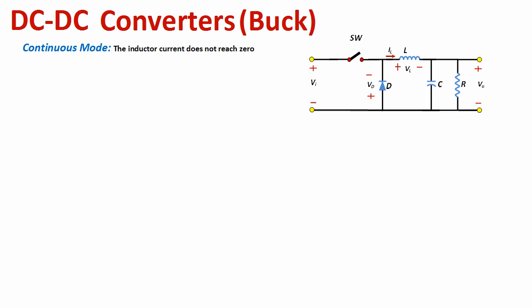We are going to assume that the output voltage is constant, meaning the ripple across the load is very small and we are going to neglect it — so it's a ripple-free circuit. We are also going to assume that VD is zero to simplify the analysis.